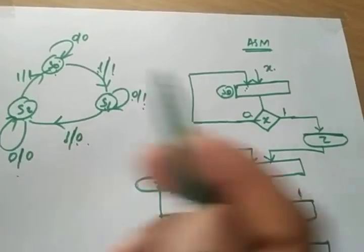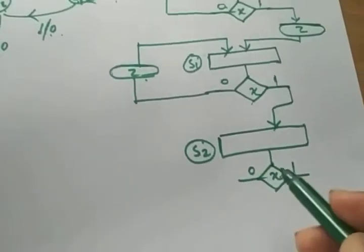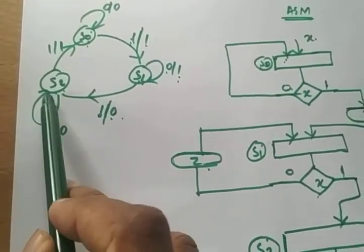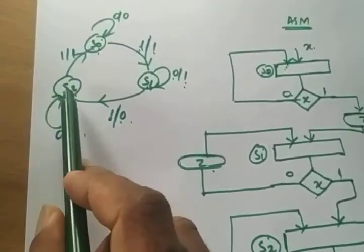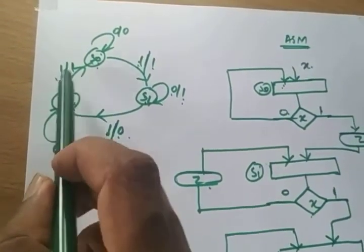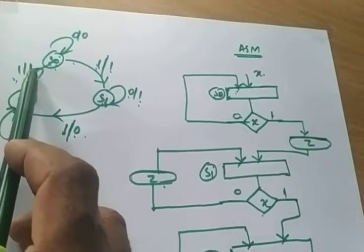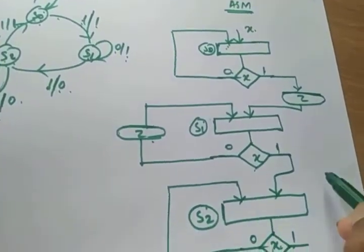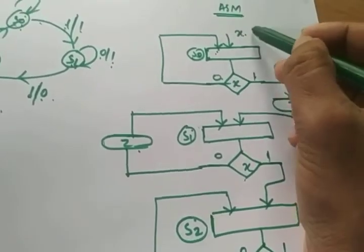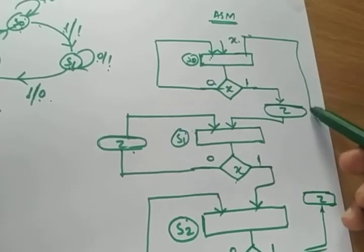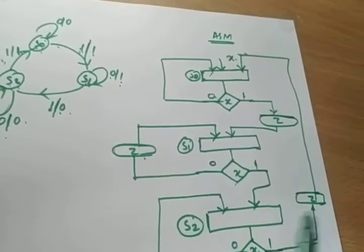For state S2, we have 0 and 1 input, so we draw the decision box. For S2 with input 0, it stays in S2 with output 0 — so we go directly back to S2. For S2 with input 1, it goes to state S0 but output is 1, so we draw a condition box with output Z, and then it goes to S0. This is the complete structure of the ASM chart for this state diagram.